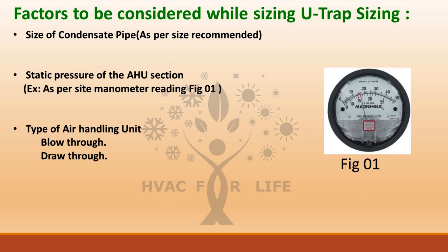Factors to be considered while sizing the U-TRAP. Point 1: size of condensate pipe, as per size recommended. Point 2: static pressure of the AHU section, as per site manometer reading. Point 3: identify the type of air handling unit — the types are blow-through and draw-through.